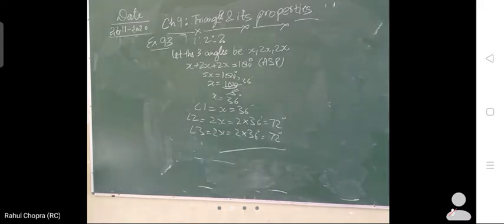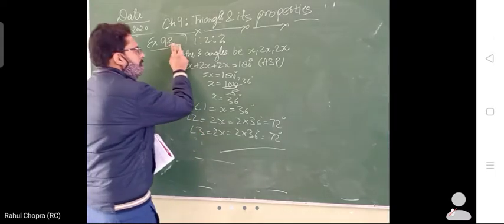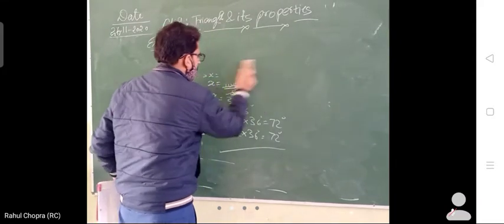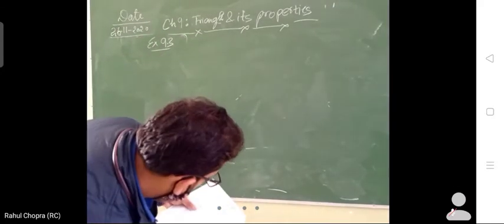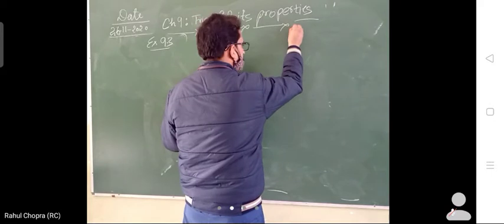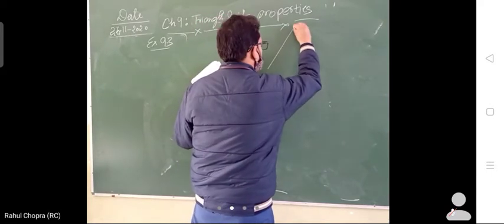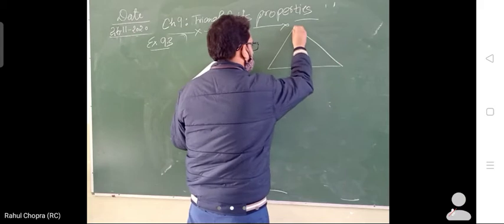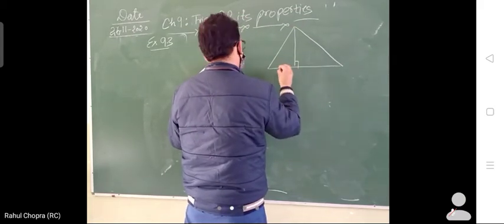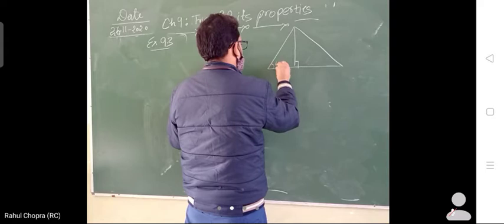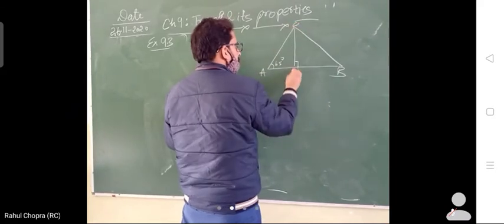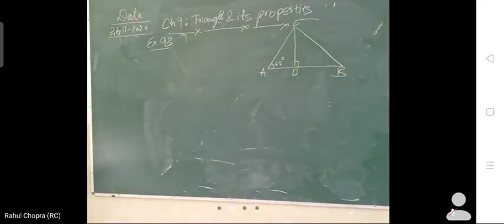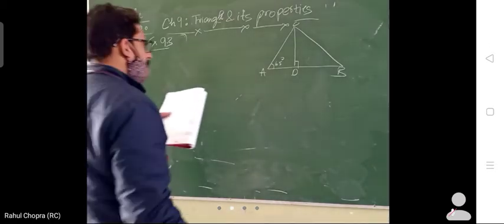Now I am explaining question number 8. In question 8 we'll first draw the figure — it has points A, B, C, D. First we have to find angle ACD.